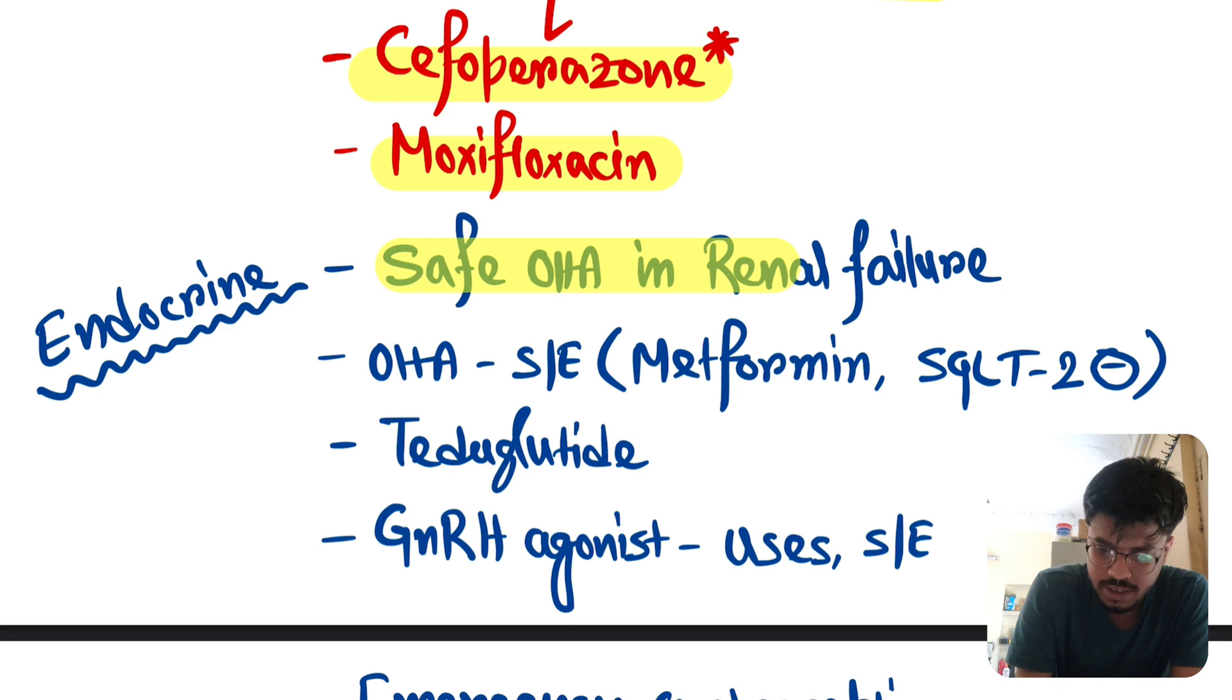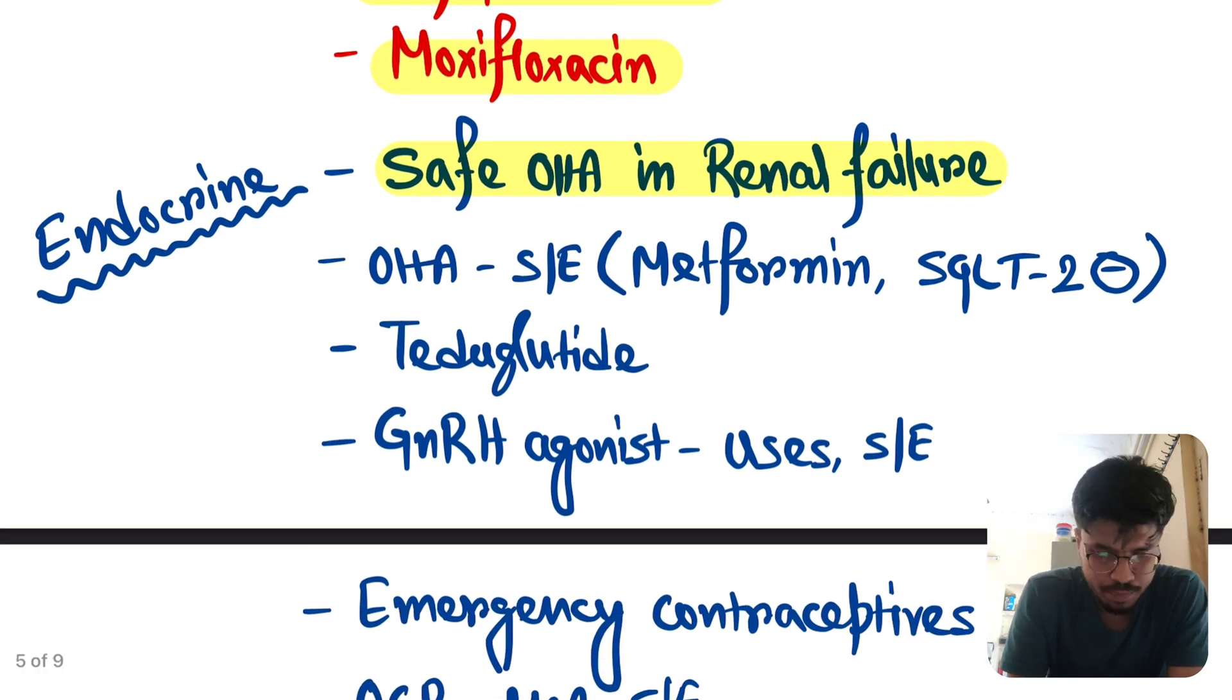In endocrine, safe oral hypoglycemic drugs in renal failure. Very very important. All the hypoglycemic drugs side effects. Specially metformin and SGLT2 inhibitor. Very very important. Repeatedly asked topics. This is repeatedly asked topics.